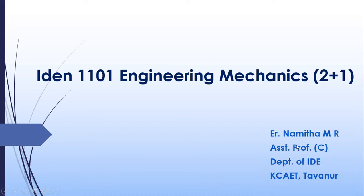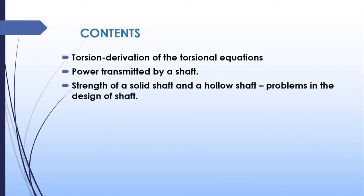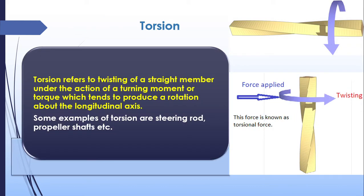In this lecture we are going to discuss about torsion, its derivation, and the power transmitted by a shaft. First of all, what is torsion? Torsion is nothing but a twisting force which is applied on a longitudinal body. Here we can see a shaft — we are applying a twisting force, so the body will tend to rotate.